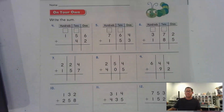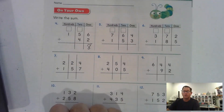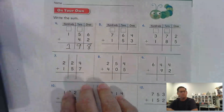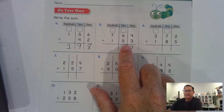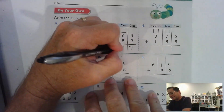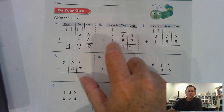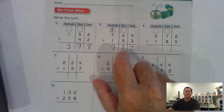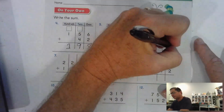Number four: six and two — no regrouping, that's eight. Five and four is nine, no regrouping again. One hundred plus nothing is one hundred, no regrouping. Number five: four and three ones is seven ones. Six and five tens — that's eleven tens, so we regroup.